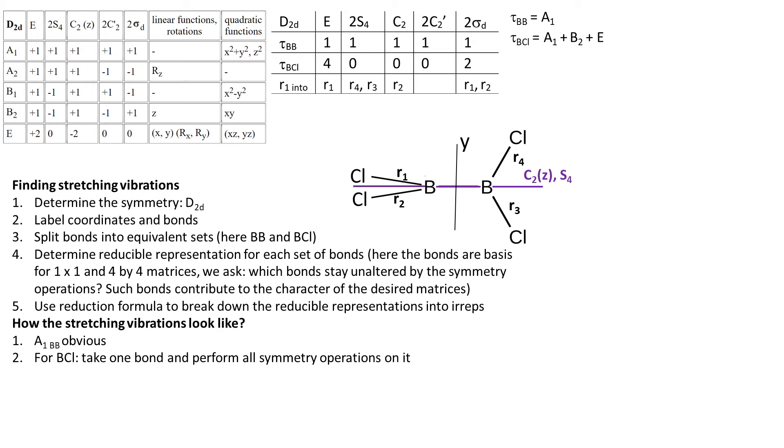In this case, we don't need any 3D models. We simply need to think for a moment. I'm sure you know how the A1 stretch of BCl bonds will look like, without the need of doing any calculations. It will be fully symmetric. All four BCl bonds are stretching outwards.